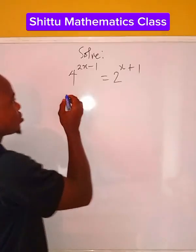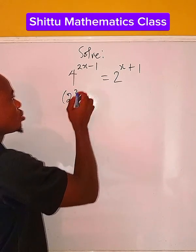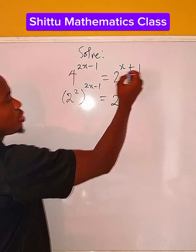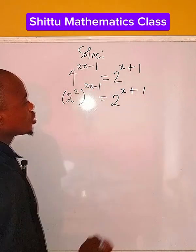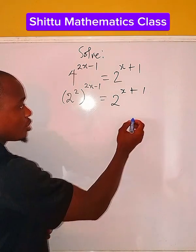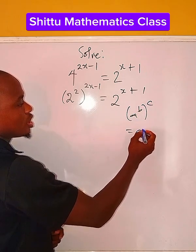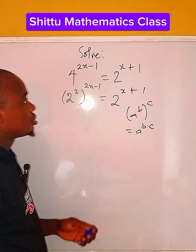So here we have, we can write this 4 as 2 to the power of 2, then to the power 2x minus 1 equals 2 to the power of x plus 1. So now from here, from the law of indices that say a to the power of b, then to the power of c, this will be a to the power of b times c, right?